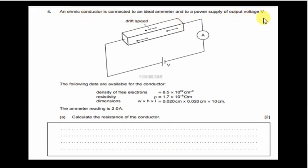Here's the diagram and the following data is available. We are given the density of electrons n, the resistivity rho, and dimensions of the conductor. The ammeter reading is 2 ampere.